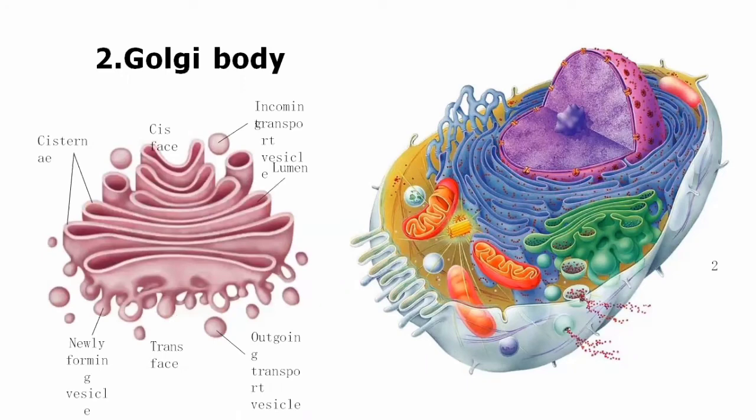Golgi bodies are seven to eight stacks and they are involved in the packaging of food materials. They are also involved in the modification of the Golgi bodies.